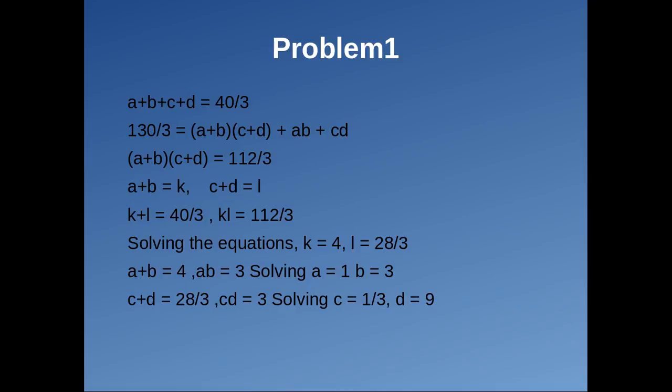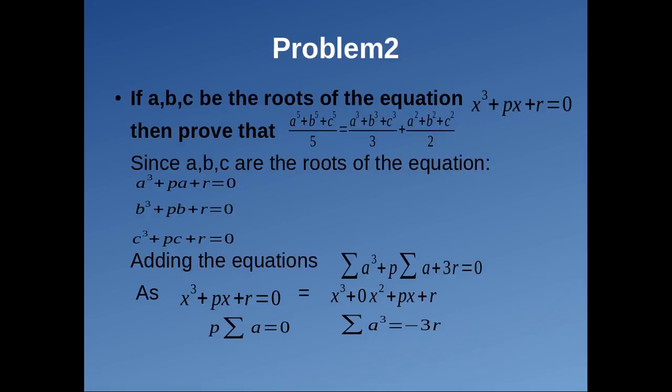Thus we get the four roots of our given equation. Now let's move on to the second problem. Let a, b, and c be the roots of the given cubic equation. We need to prove that the sum of the 5th powers of the roots divided by 5 equals the sum of the cubes of the roots divided by 3, plus the sum of squares of the roots divided by 2. Since a, b, and c are roots of the equation, substituting x by a, b, and c respectively gives us three equations, each equal to zero.